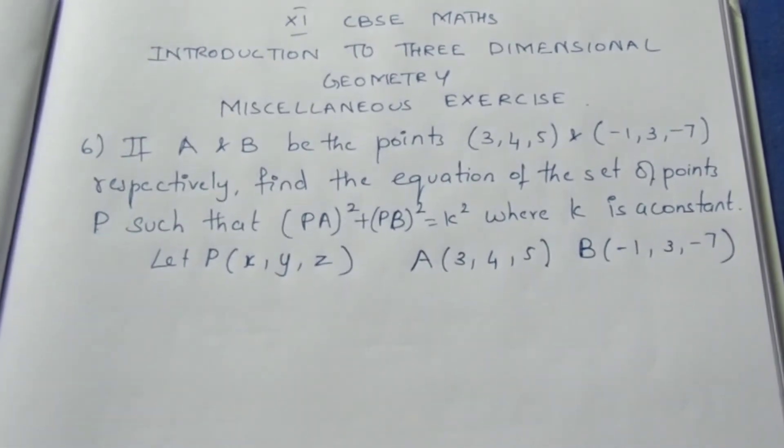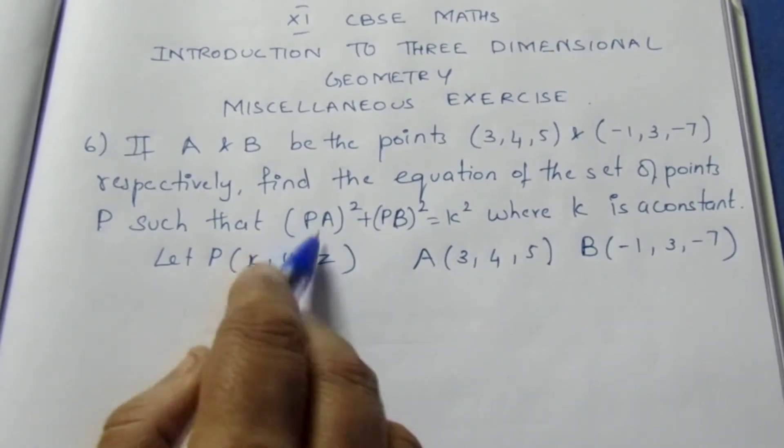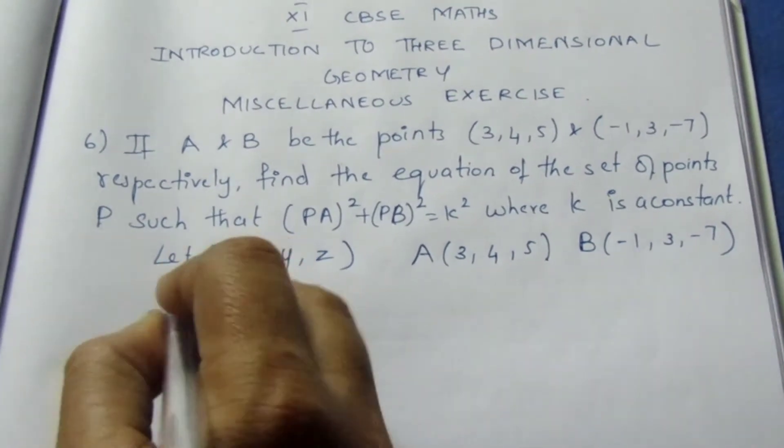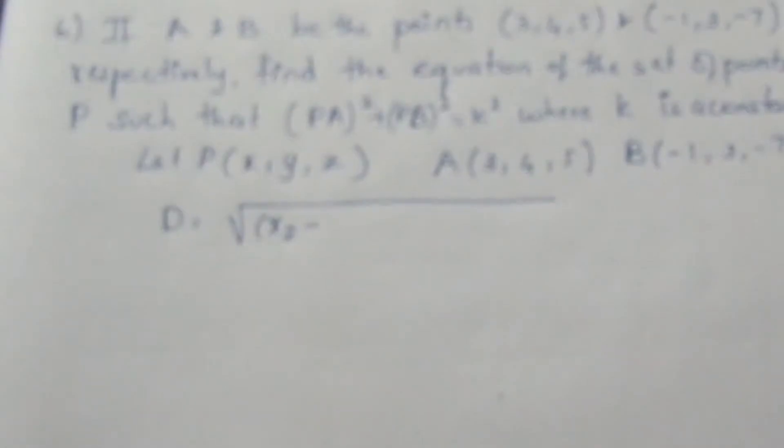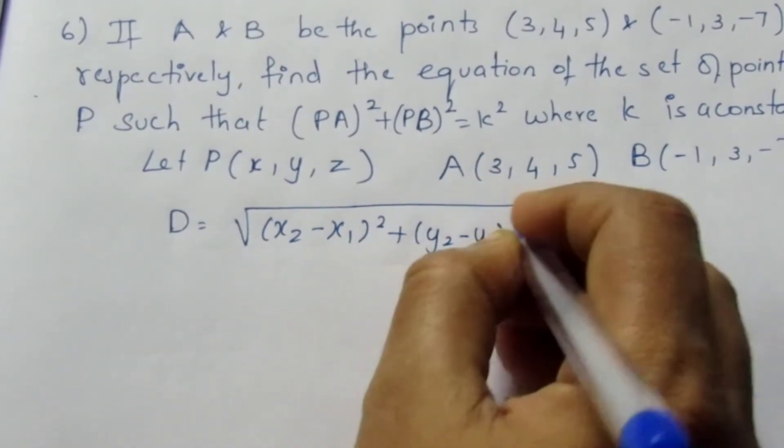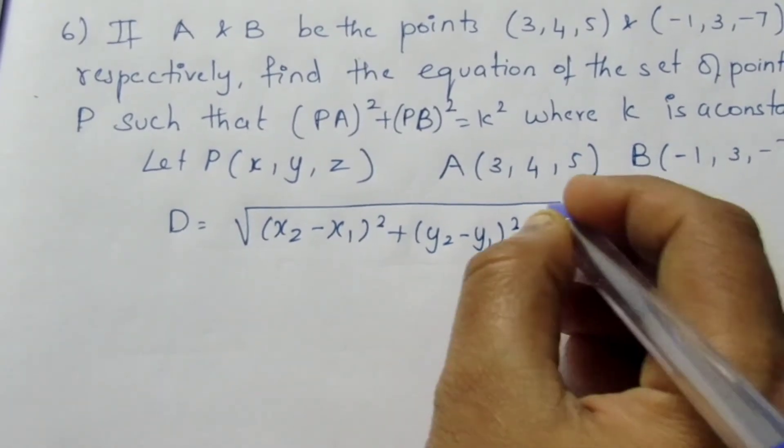Now PA square plus PB square equal to K square. We have to use the distance formula. Distance is equal to root of (X2 minus X1) whole square plus (Y2 minus Y1) whole square plus (Z2 minus Z1) whole square.